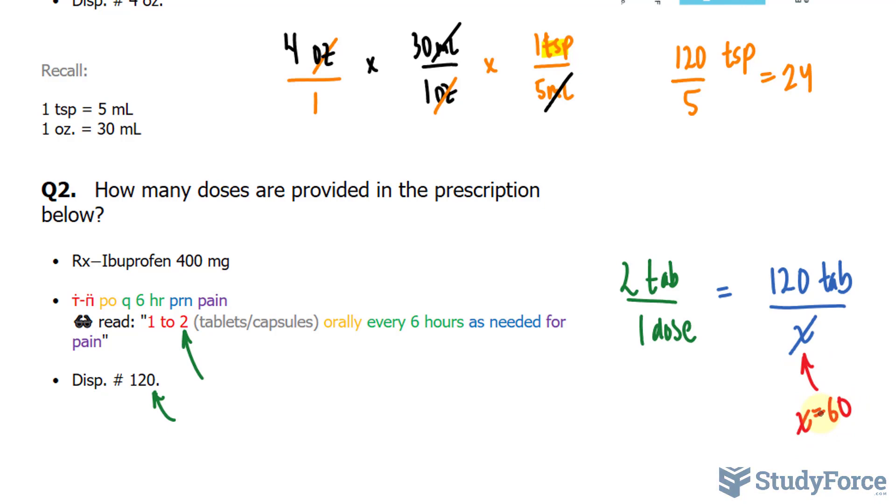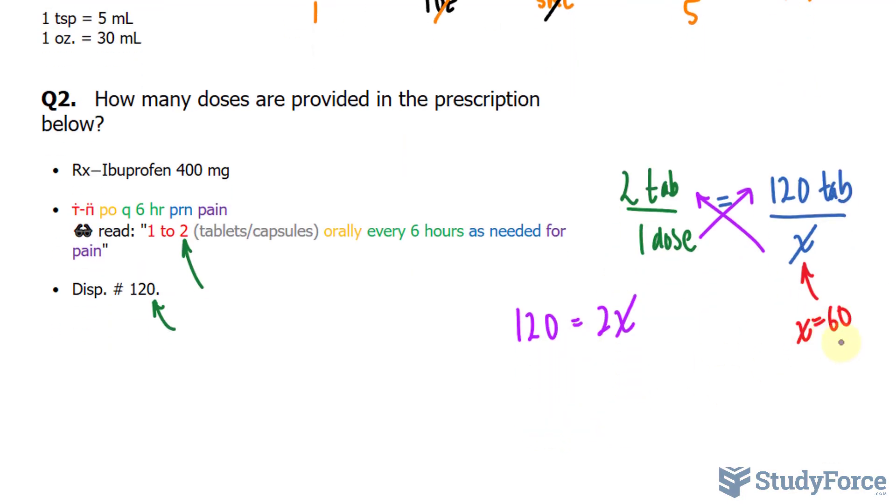Sometimes you might get decimal numbers, and in that case, you would cross multiply and solve for x algebraically. For example, one times 120 is 120. Two times x is 2x. And then dividing both sides by two gives you a minimum of 60 doses.